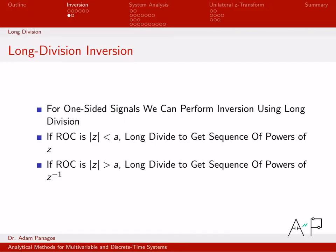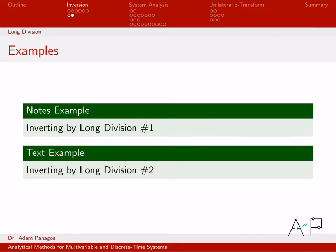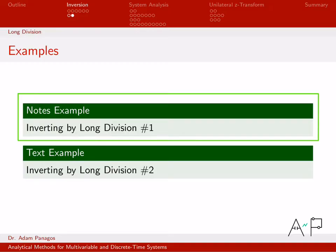We're really just going to do kind of high school long division and get out this sequence of Z's which we can then easily transform back to the time domain. In our first example here, inverting by long division number one, we'll work through an example where we go right-sided. And then in the next video we will work through a left-sided example. But first, the right-sided example.